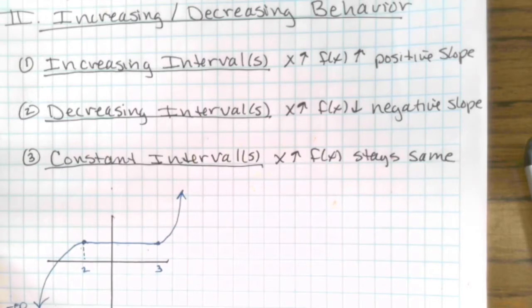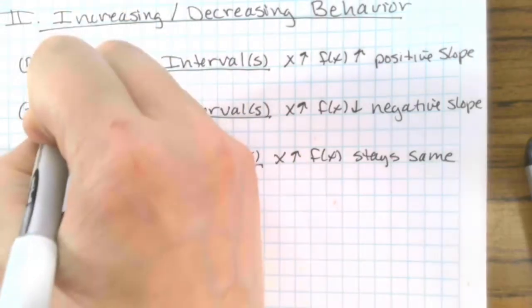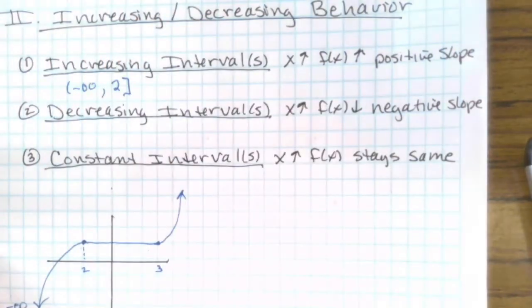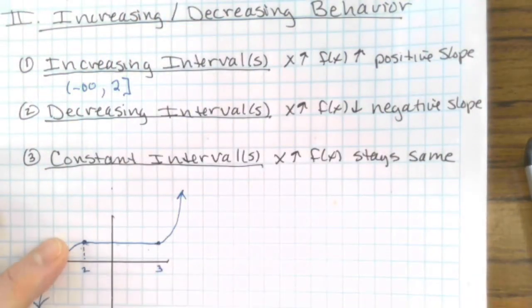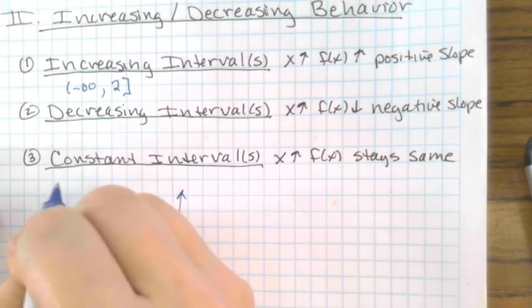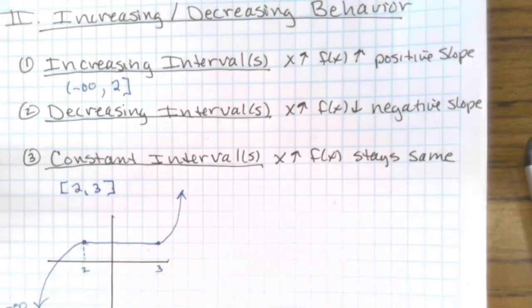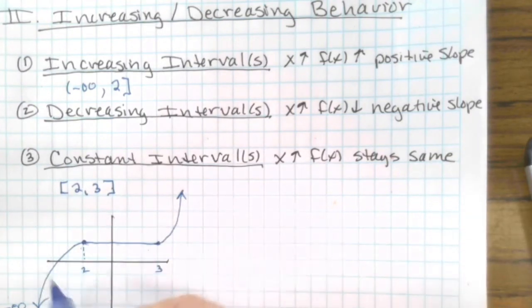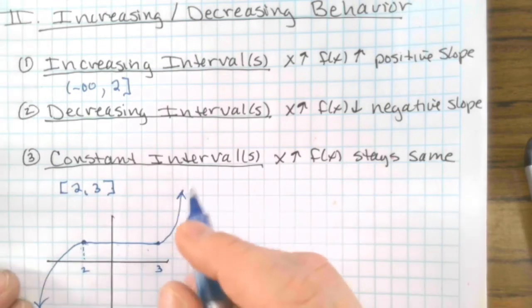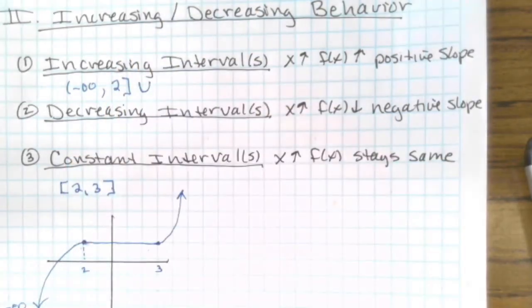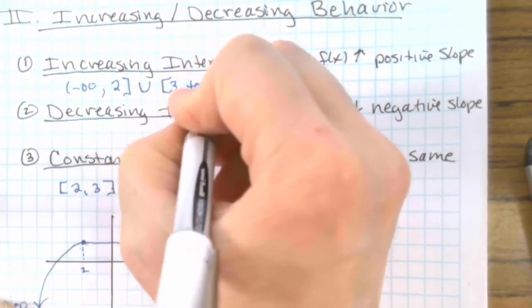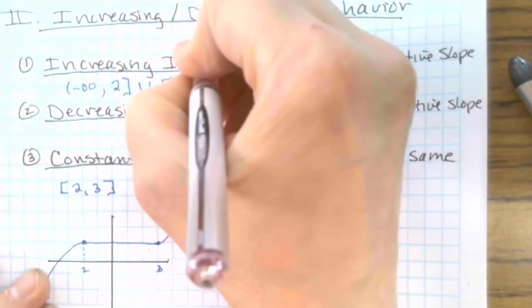From here it gets flat, so your constant interval is between 2 and 3. And this interval here is also increasing — it's not decreasing, it's continuing to go upward — so we put a union symbol with 3 up to positive infinity. And just to remind you, anytime they're talking about an interval, they're talking x values.